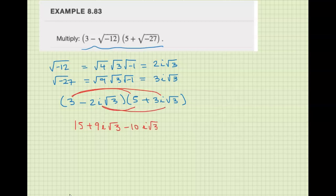And this one we have negative 2 times 3 is minus 6. i times i is i squared. And square root of 3 times square root of 3 is square root of 9. We can combine these.